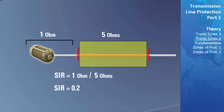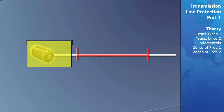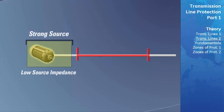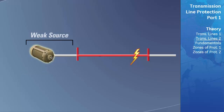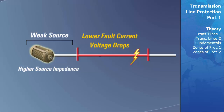If the system behind the transmission line has a strong source, the source impedance will be low. In this configuration, if a fault occurs on the transmission line, the fault current will be very high and the voltage will tend to remain stable. If the system behind the transmission line has a weak source, the source impedance will be higher. In this configuration, if a fault occurs on the transmission line, the fault current will be lower in magnitude and the line voltage will tend to drop.